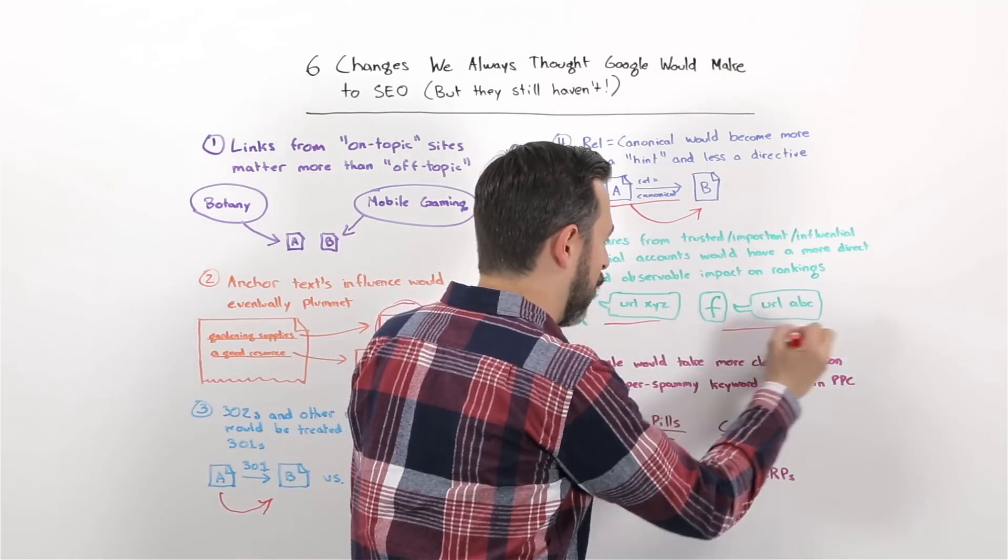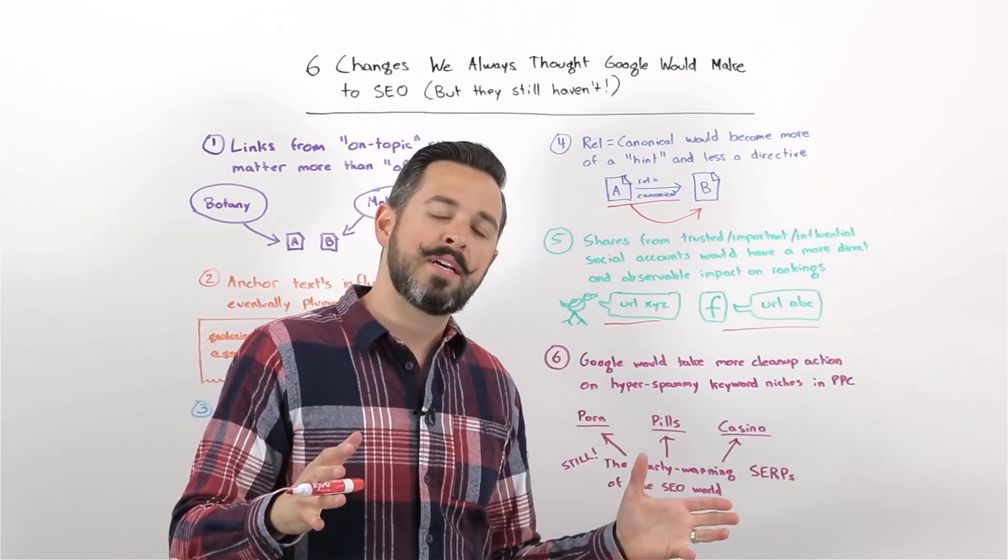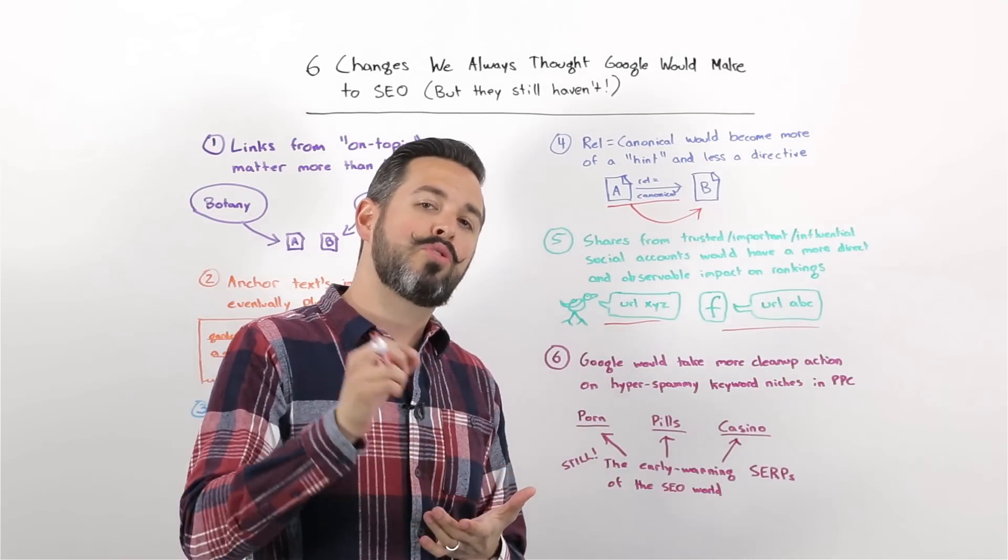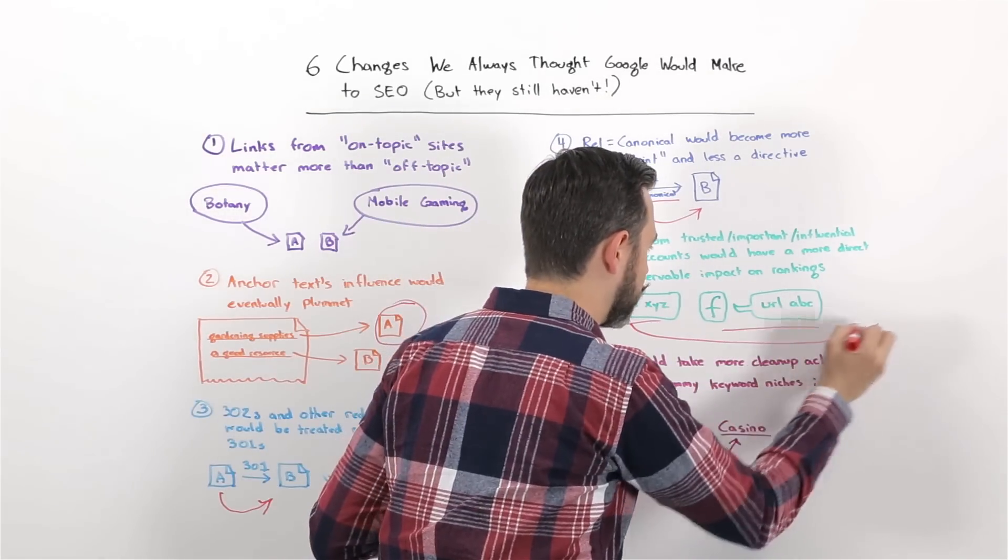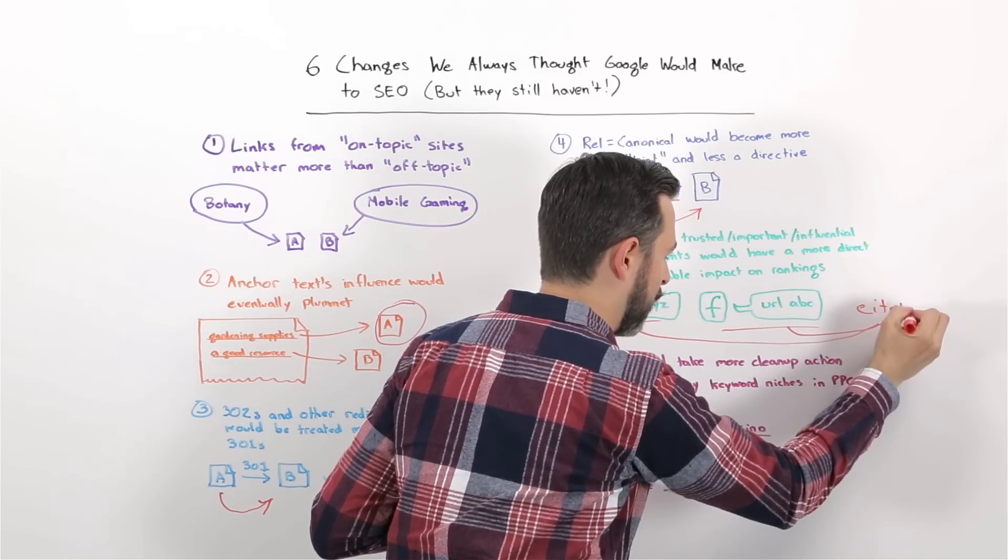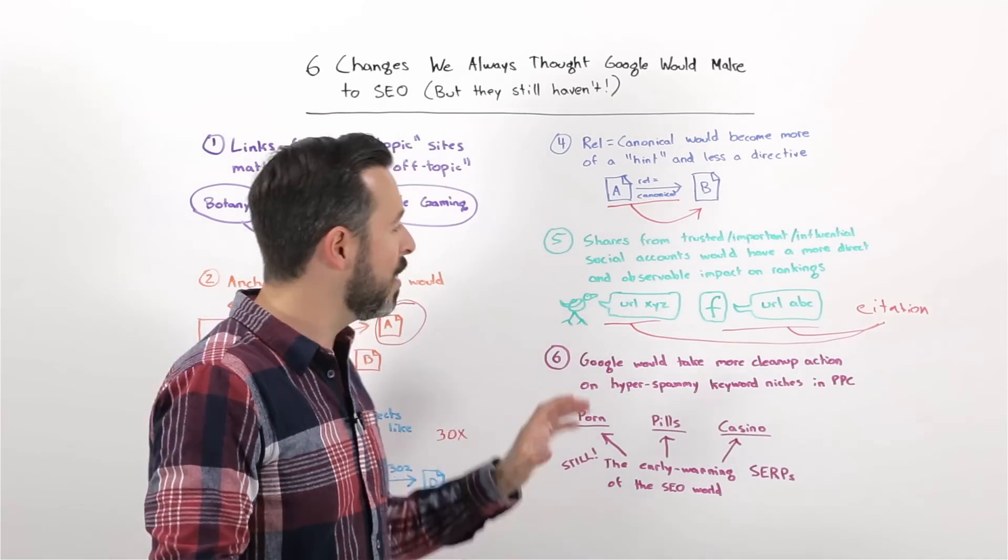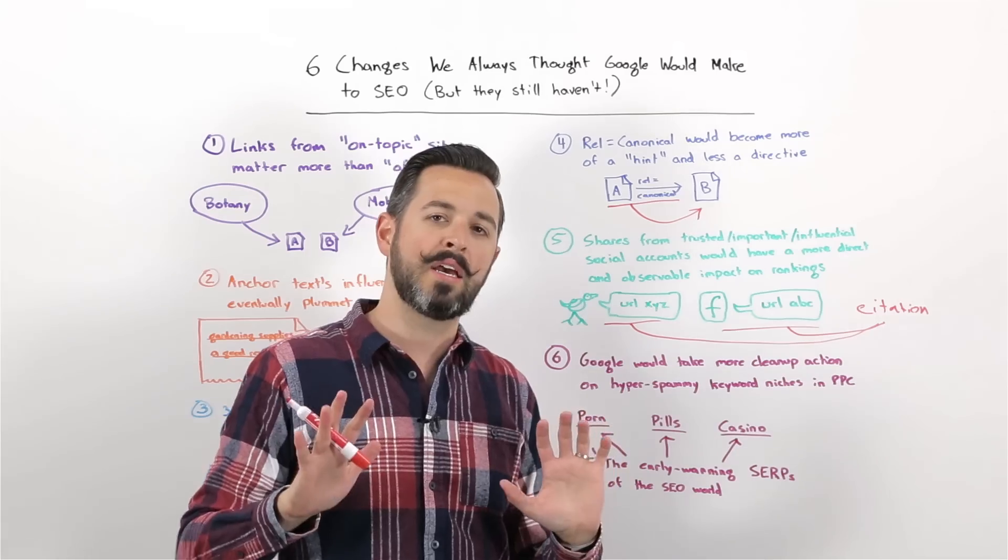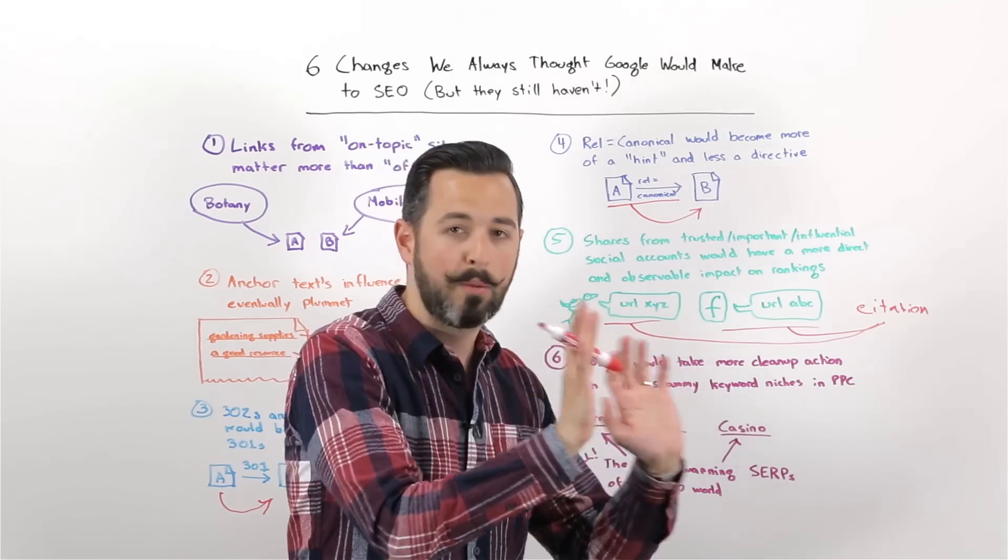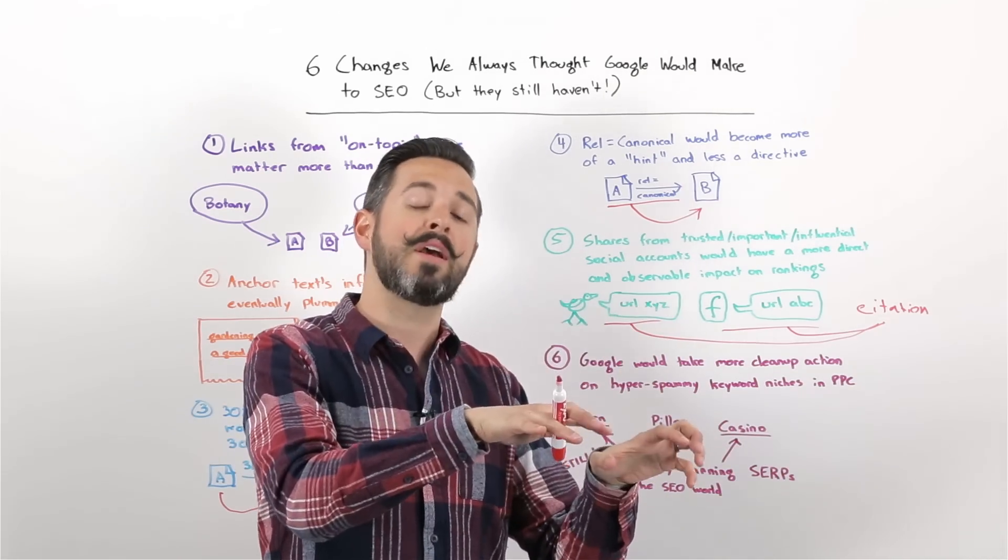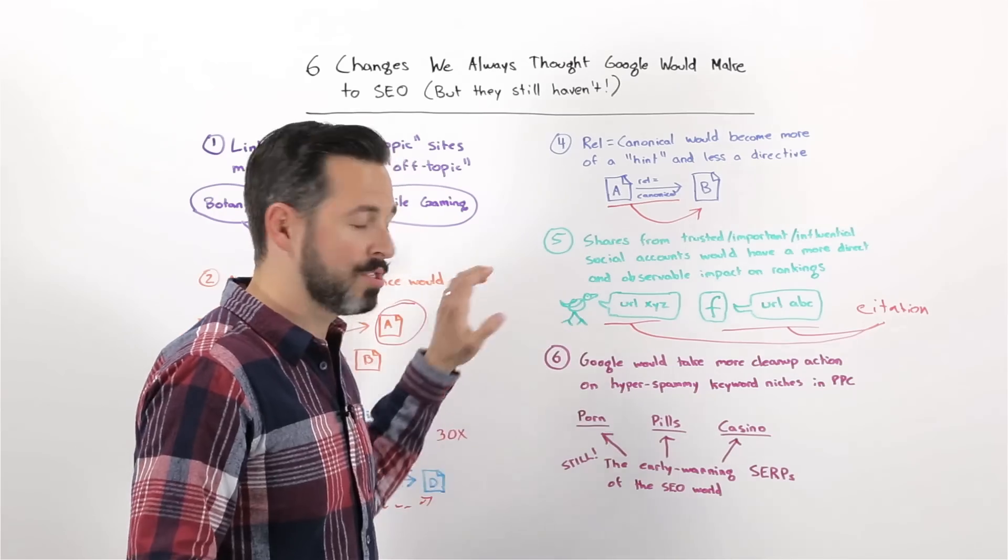And so these shares that are happening all over social, I think what's really happening here is that Google is taking a look and saying, hey, yes, lots of social sharing is going on. But the good social sharing, the stuff that sticks around, the stuff that people really feel is important, is still later on at some point earning a citation, earning a link, a mention, something that they can truly interpret and use in their ranking algorithm.